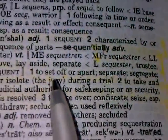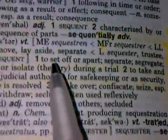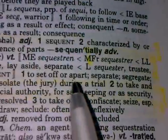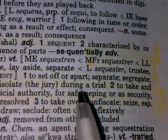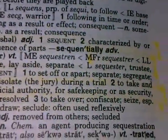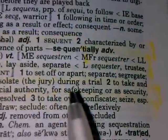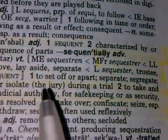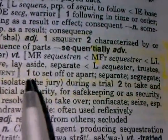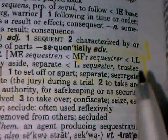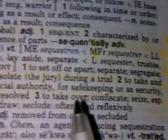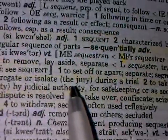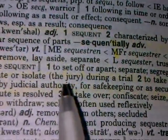So here's the root for sequester, sequestrum, sequestration. It says to set off — that's the first connotative meaning. Set it off on the left, set it off on the right — Democrat, Republican, liberal, conservative. One: to set off or apart, to separate, to segregate. Often to segregate or to isolate — for example, the jury during a trial.